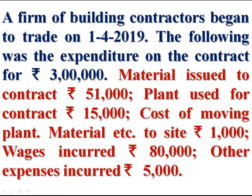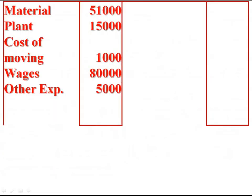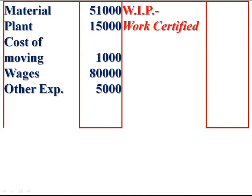These expenses have to be debited to the contract account. So the contract account is debited. Then we have to credit work in progress, because this is an uncompleted contract. Work in progress is equal to work certified plus work uncertified.